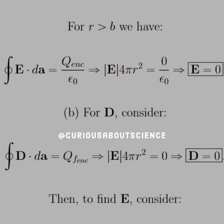Recall that previously we showed that the total bound charge vanishes when you polarize a neutral dielectric. So for R greater than B, the Q enclosed is zero, and we again have E equals zero because of this.